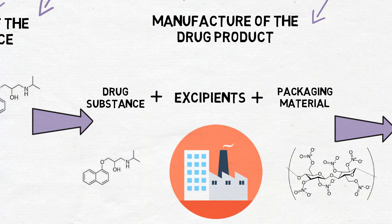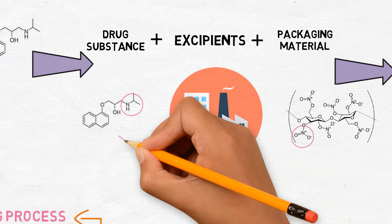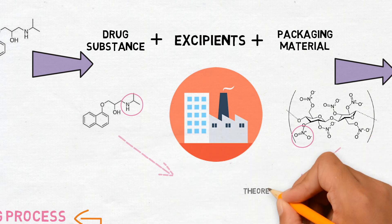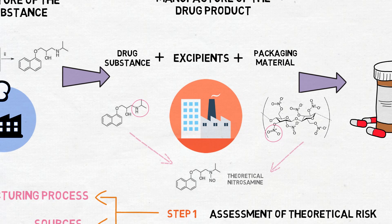In case one contains the amino group and the other contains a nitro group, if both the precursors are present in the formulation, there is a theoretical risk of forming a certain nitrosamine. This is the evaluation that should be done considering the entire process.